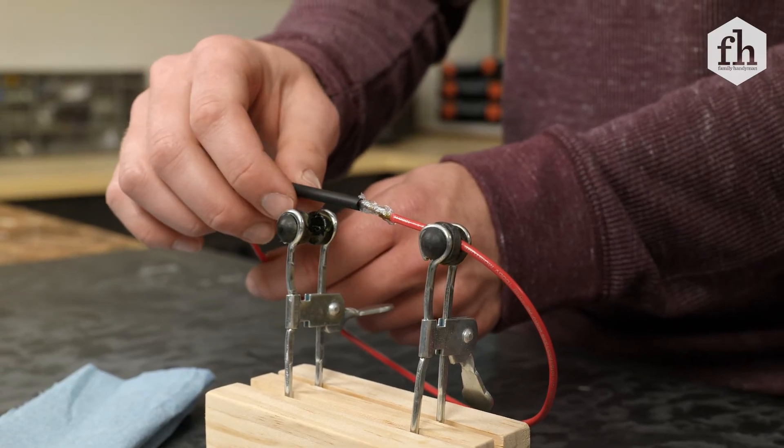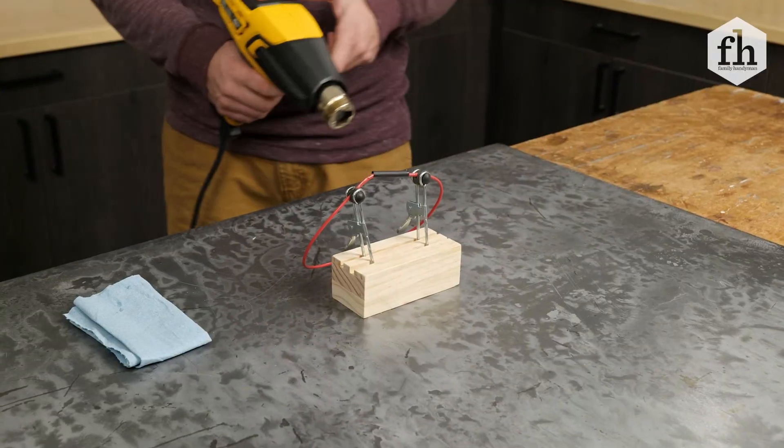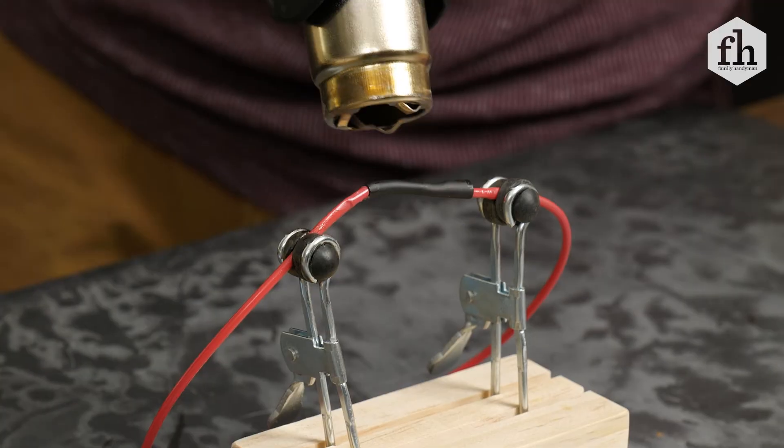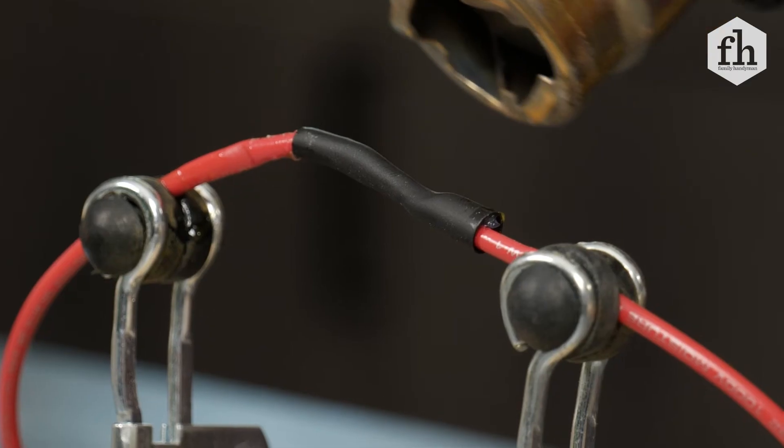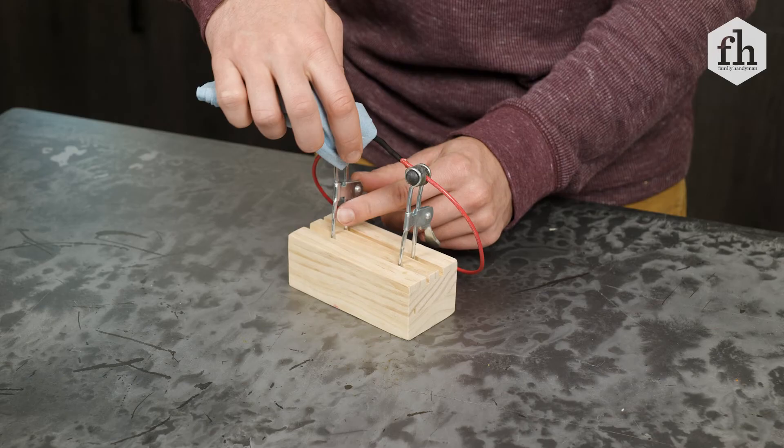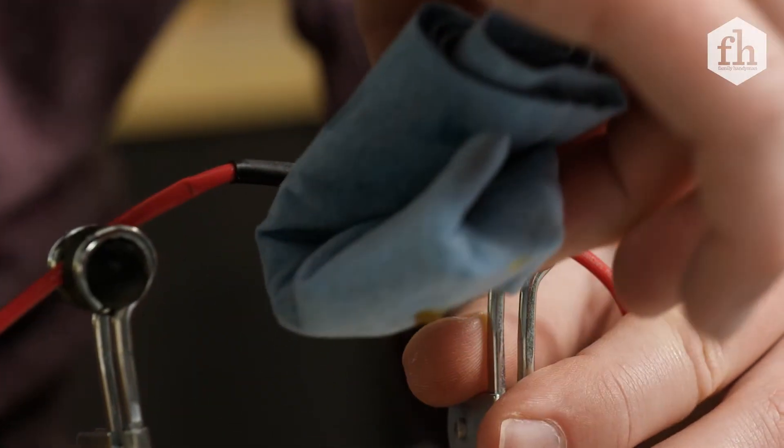Slide the heat shrink tube sleeve over the solder and begin heating the sleeve with a heat gun. Start at the center of the tube and work your way out slowly. Finish up by cleaning off excess dielectric paste.